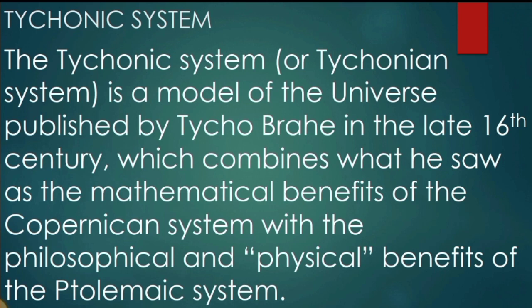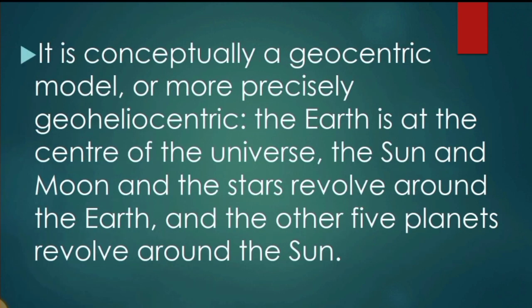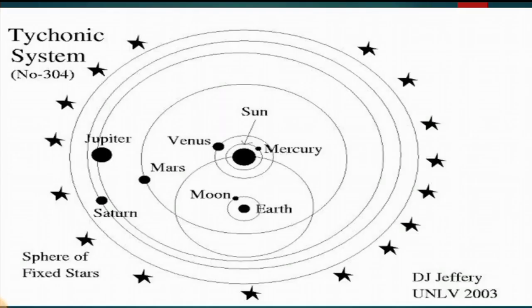The name 'tyconic' obviously comes from Tycho Brahe's name. Conceptually it is a geocentric — or more precisely, geo-heliocentric — model: the Earth is at the center of the universe, the Sun, Moon, and stars revolve around the Earth, and the other five planets revolve around the Sun.